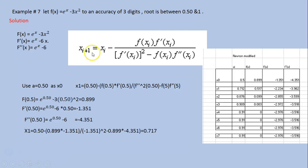Starting from x₀ = 0.5, we plug into the expression for x₁ with i = 0: x₁ = 0.5 minus f(0.5) times f'(0.5) divided by [f'(0.5)]² minus f(0.5) times f''(0.5). In the Excel sheet with x₀ = 0.5, we get f(0.5), the slope value f'(0.5) = -1.351, and f''(0.5) = -4.351.